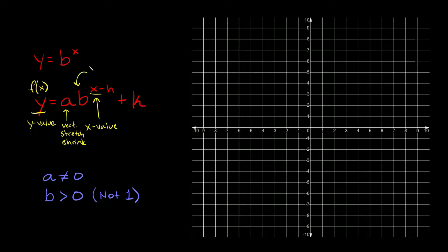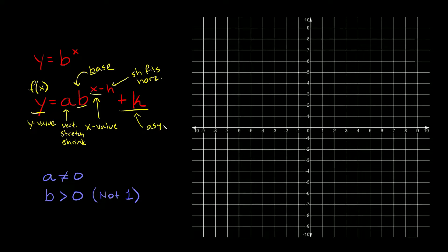The 'b' is your base. The 'h' next to the x shifts your graph left or right — horizontally, side to side. And then this last number, plus or minus k, shows you where your asymptote is. The asymptote is just a horizontal line on the graph that your graph gets really, really close to but never actually touches.